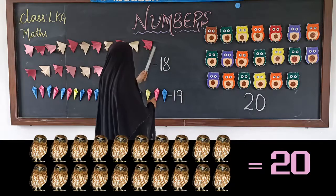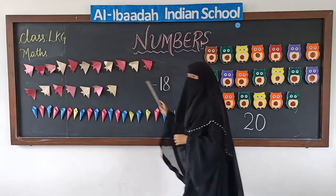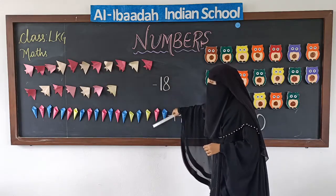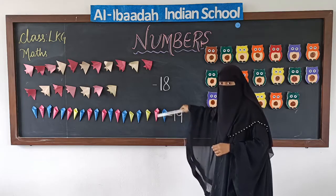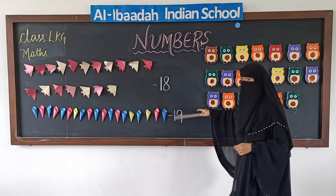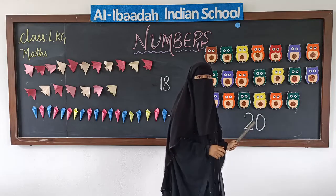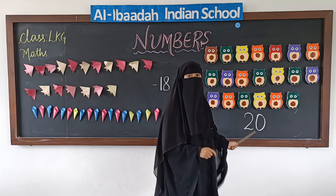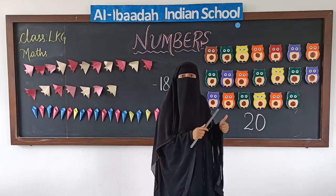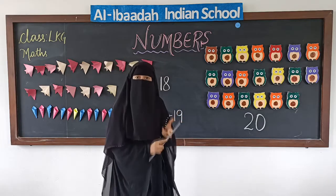Now, here how many fishes are there? There are altogether 18. After 18, how many cones are there? 19. And after cones, how many owls are there? There are 20 owls. So today we learnt the numbers 18, 19, and 20.